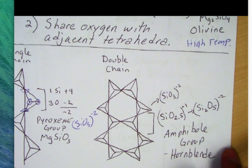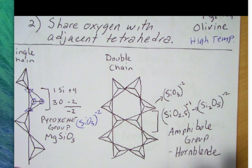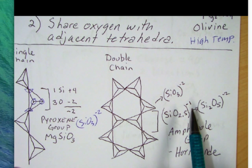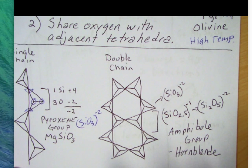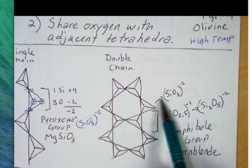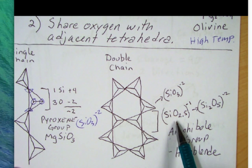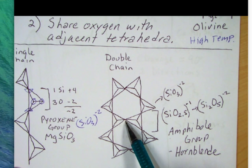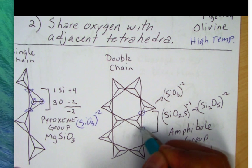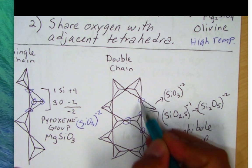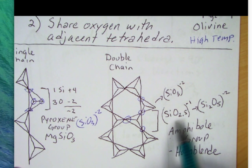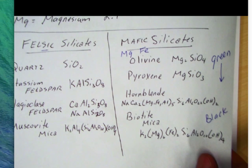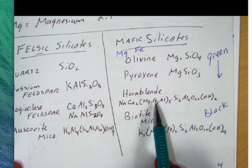Then as we go along, there's a group called the double chain group, which includes hornblende — called the amphibole group. This is a really complex mineral with a very long, strange formula, because some tetrahedra are like the pyroxene group but others share three oxygen. This one is sharing one, two, three, whereas this one over here is only sharing two. So it gets pretty complicated, and the formula for hornblende is quite long and complex.